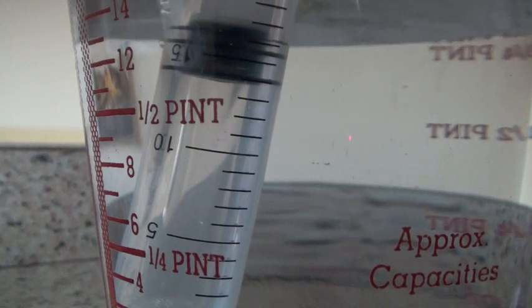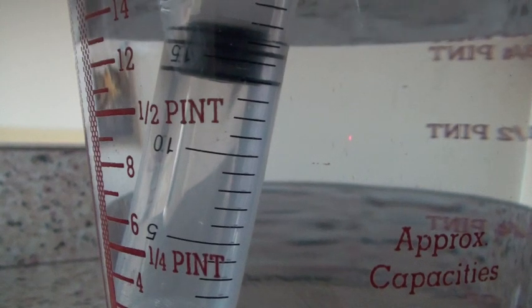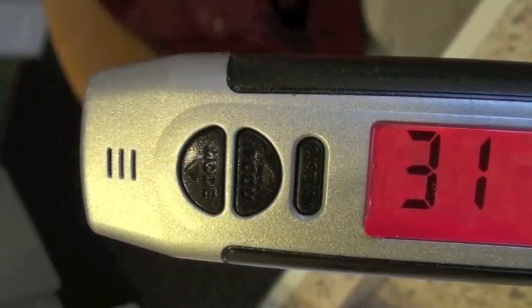For the second pair of measurements, the first being in the freezer, you can see that the volume is now 14 cubic centimeters, and the temperature is 31 degrees Celsius.